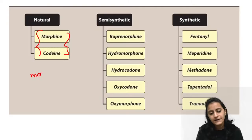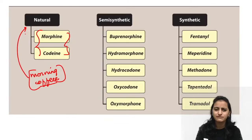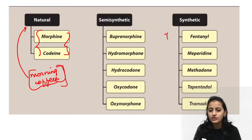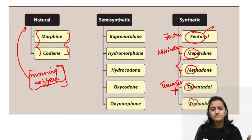Remember natural opioids with the mnemonic 'morning coffee' — it's natural. Synthetic opioids are like soft drinks: Fanta, Mirinda, and Thumbs Up. Fanta represents fentanyl, remifentanil, sufentanil; Mirinda's M gives mepiridine and methadone; Thumbs Up's T gives tramadol and tapentadol. Semi-synthetic opioids are represented by water — H₂O — giving hydromorphone, hydrocodone, oxycodone, and oxymorphone.